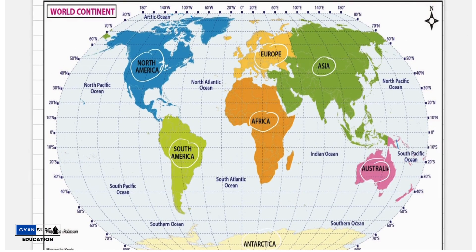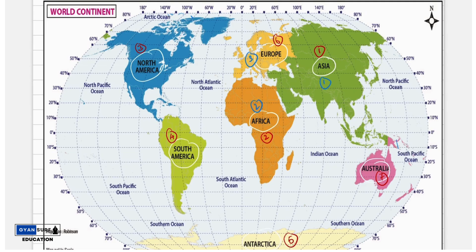So if we represent according to population: first is Asia, second is Africa, third is Europe, fourth is North America, fifth is South America, sixth is Australia, and seventh is Antarctica.